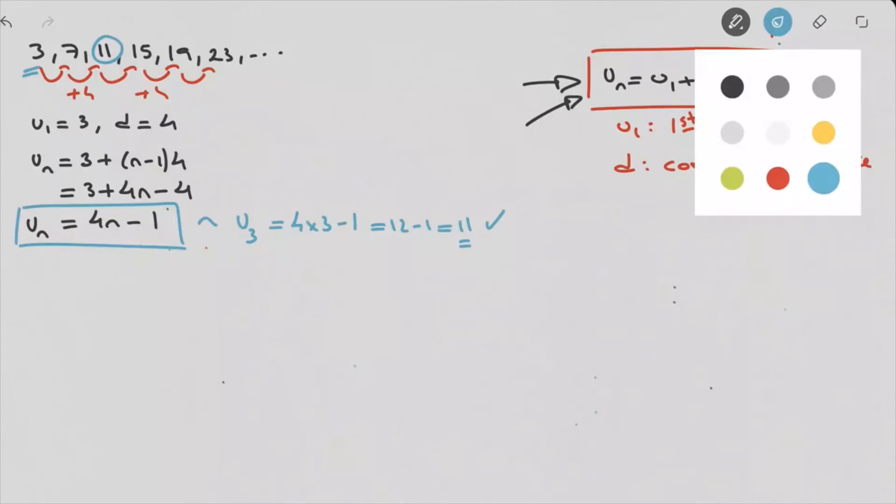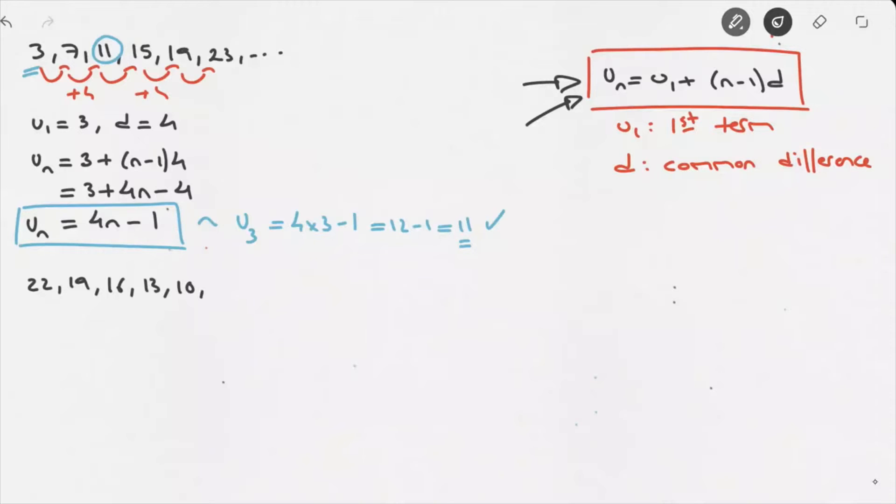Let's look at another example. Let's say we were given the sequence of numbers: 22, 19, 16, 13, 10, and so on. Well, looking at this, we can see that to go from one term to the next, we're always subtracting the same amount. So, this sequence is arithmetic. Which means, once more, that we can use our formula. So, let's go ahead and do it.